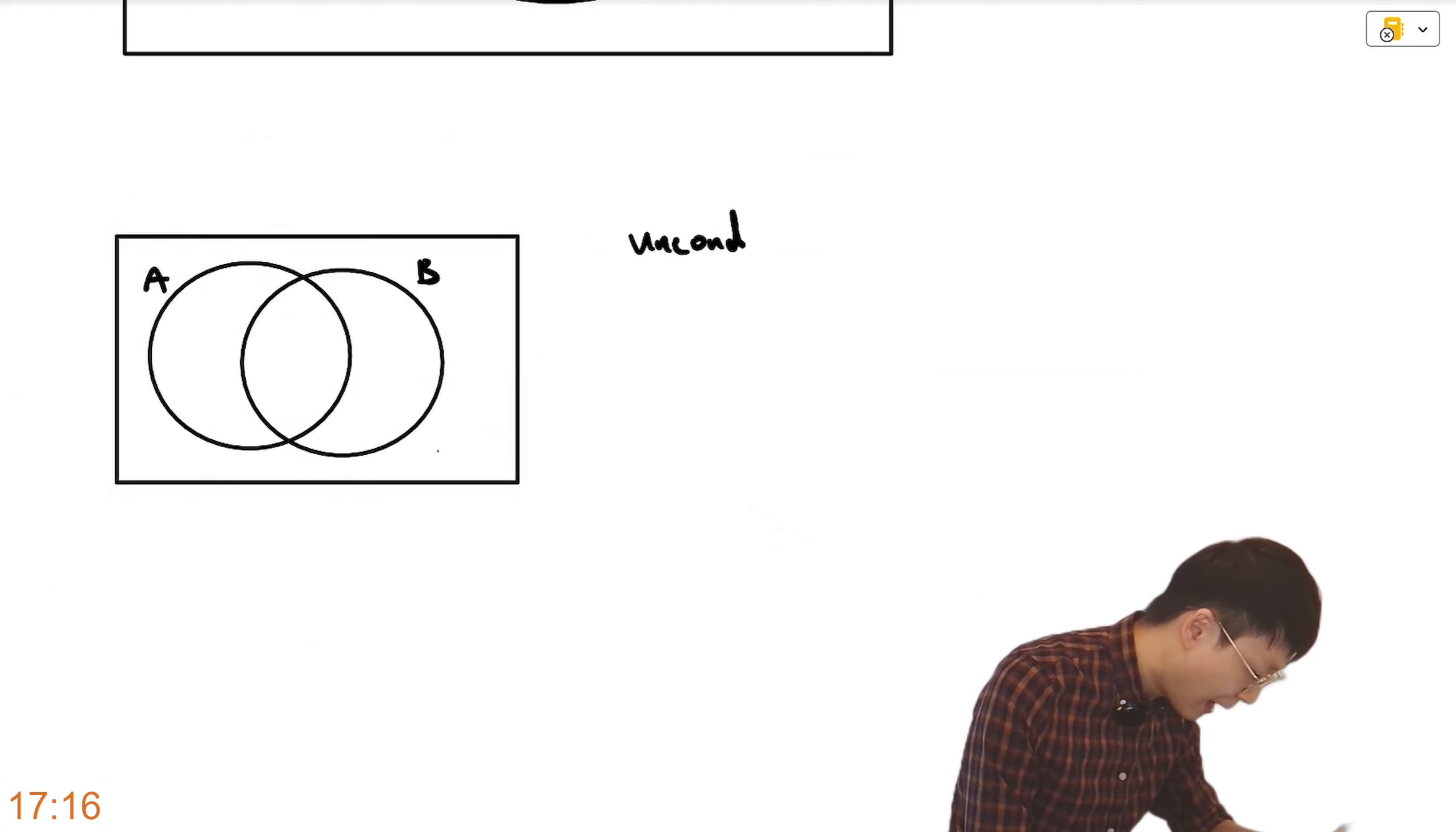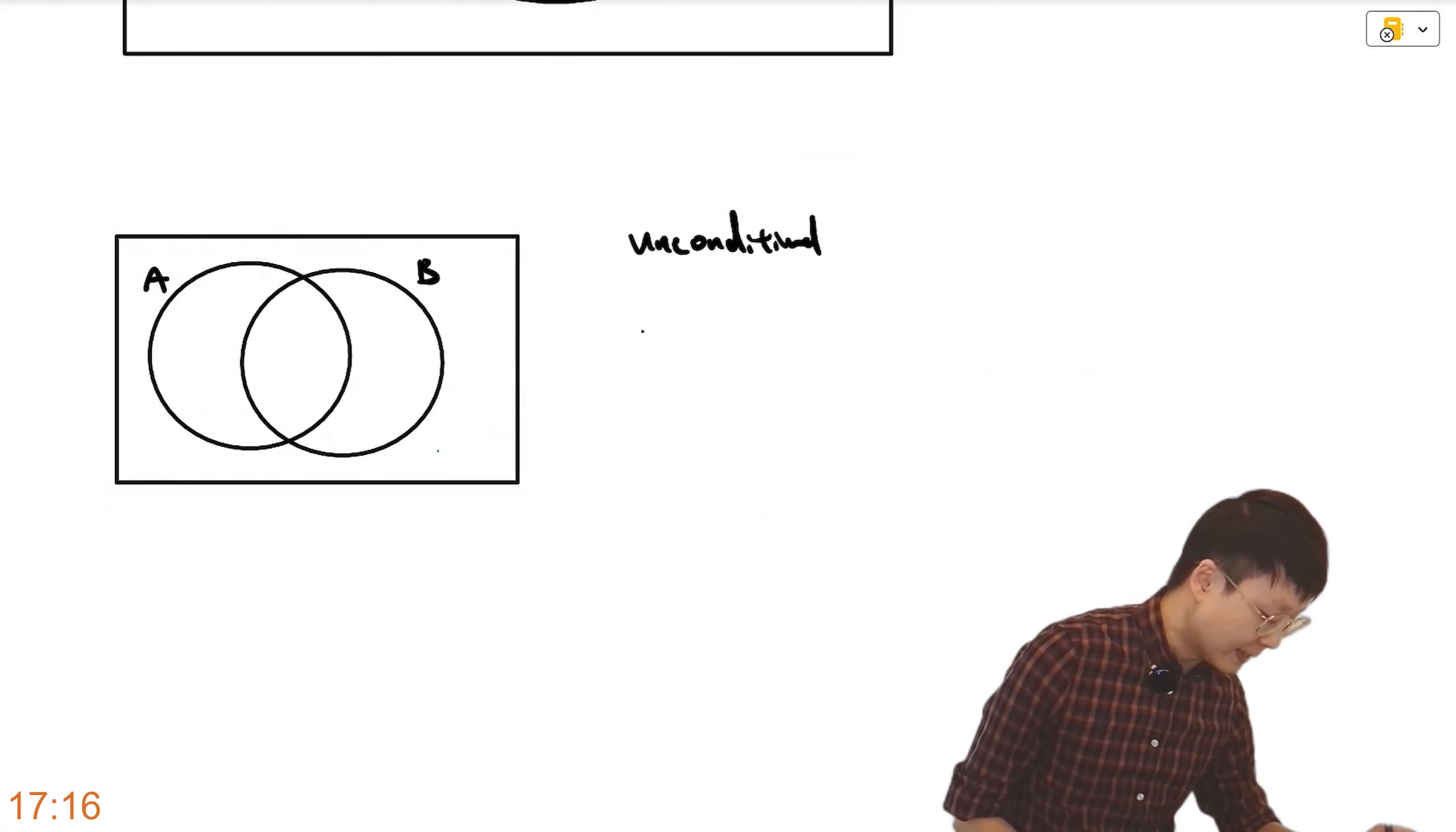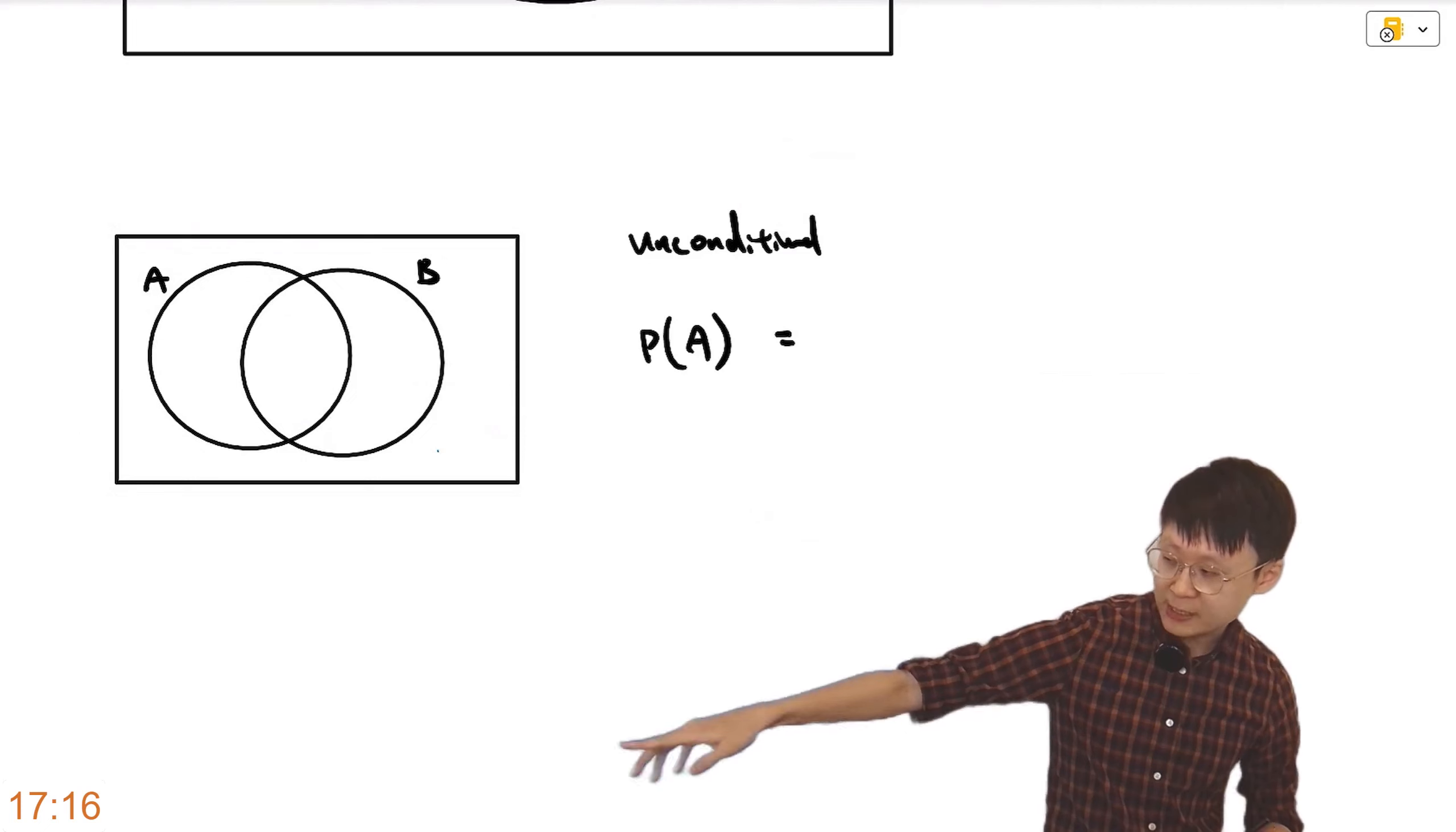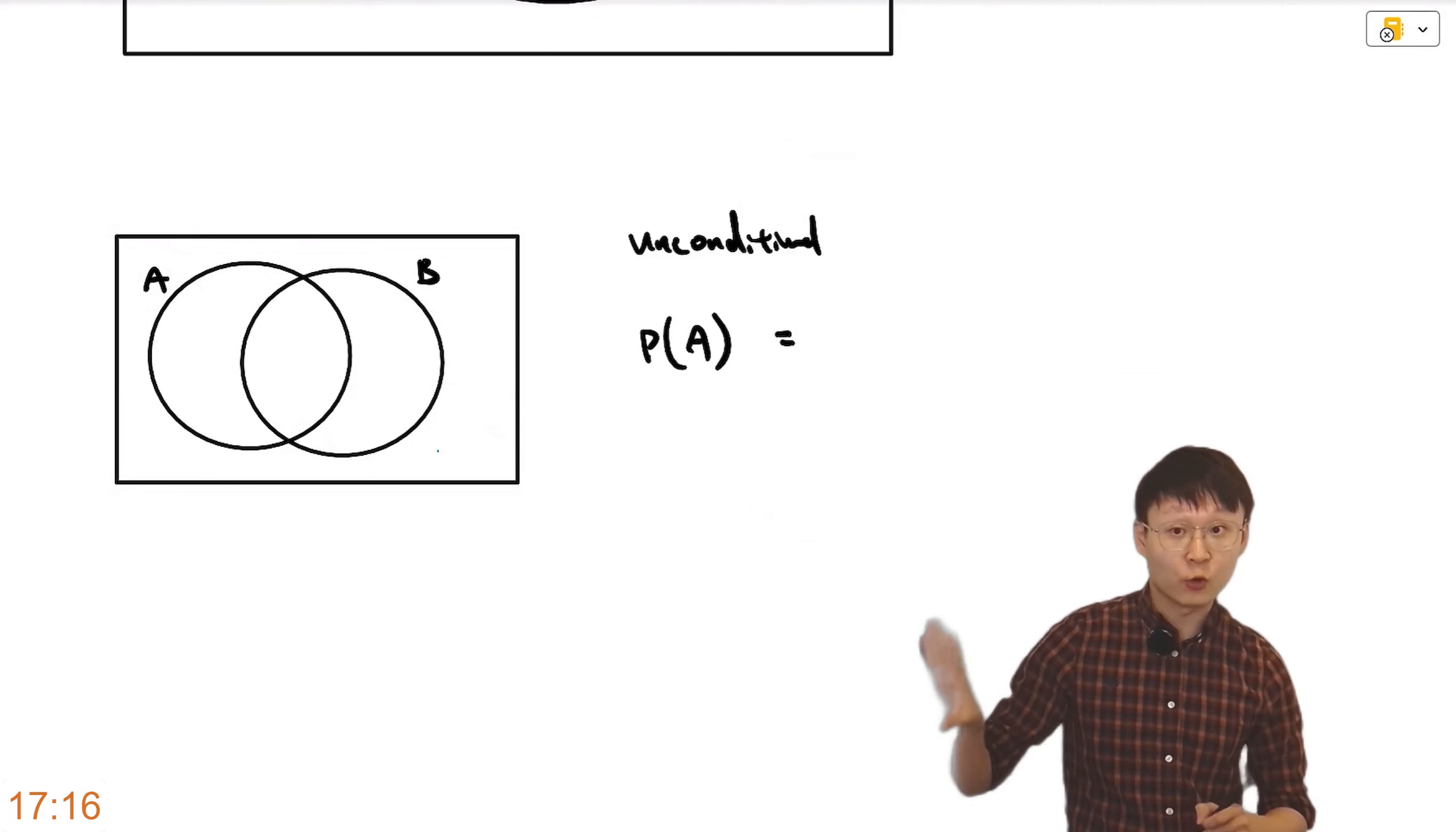For example, if somebody asks you for an unconditional probability, such as P(A). If I don't say conditional something, this will be referred to as an unconditional probability.